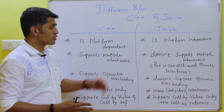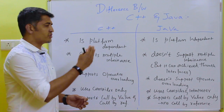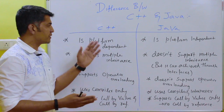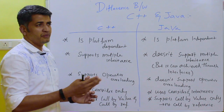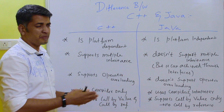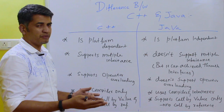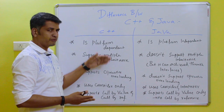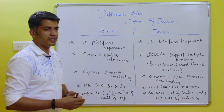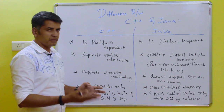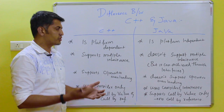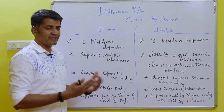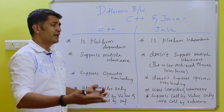Another major difference is that C++ is platform dependent — its program execution depends on the platform, such as Windows or Linux. Java, on the other hand, is platform independent because it has JRE and JVM. JRE provides the Java runtime environment and JVM provides the execution environment, so Java can be executed on any platform — Windows, Linux, or Mac.